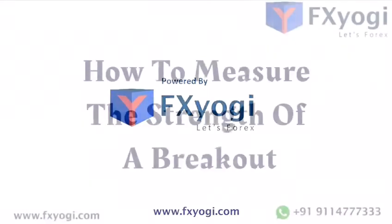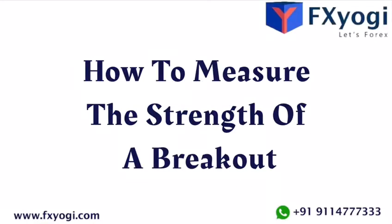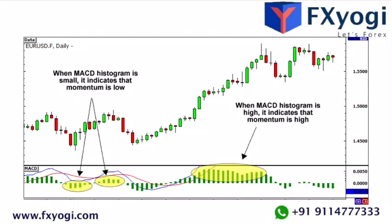Welcome to another video of Effects Yogi. In today's video we will learn how to measure the strength of a breakout. As you learned earlier, when a trend moves for an extended period of time and starts to consolidate, one of two things could happen: one, the price could continue in the same direction — that's called a continuation breakout; two, the price could reverse in the opposite direction — that's called a reversal breakout. Wouldn't it be nice if there was a way to confirm a breakout and avoid fakeouts?